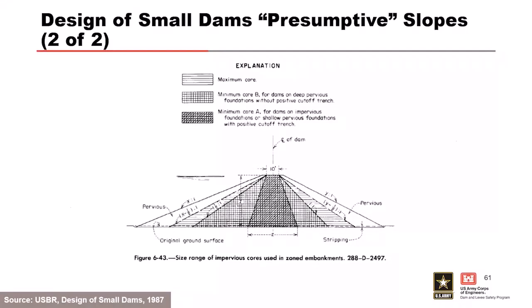The associated figure shows recommended core widths as well. The core width is a balance between a wider core to prevent seepage issues and a thinner core to reduce slope instability potential, since the core is often a weaker material and the shells buttress it and keep it in place.